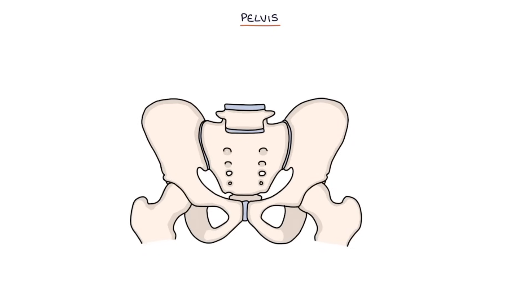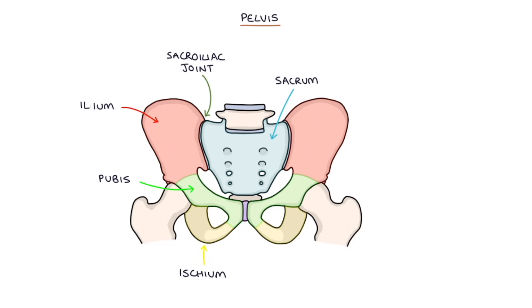Next let's move on to the pelvis. The pelvis is made of three main bones: the ilium, the ischium, and the pubis bones. At the base of the spine is the sacrum, which attaches to the ilium of the pelvis at the sacroiliac joint. On either side at the front of the pelvis are the pubis bones, which join in the centre at the pubic symphysis. Inferiorly there is the ischium. The socket of the hip joint is called the acetabulum, located at the point where all three bones of the pelvis meet together.